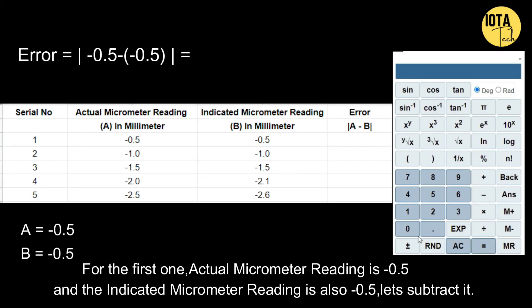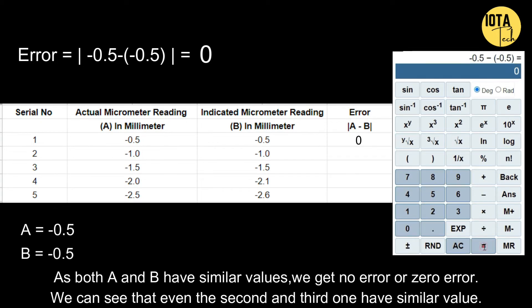For the first one, the value of the actual micrometer reading is -0.5 and the value of the indicated micrometer reading is also -0.5. Let's subtract it. As both A and B have similar values, we get no error or a zero error.